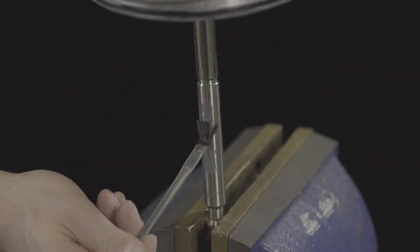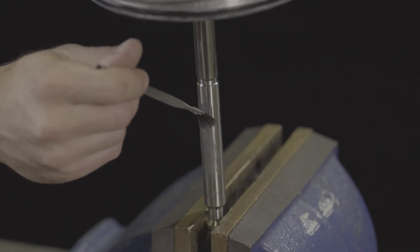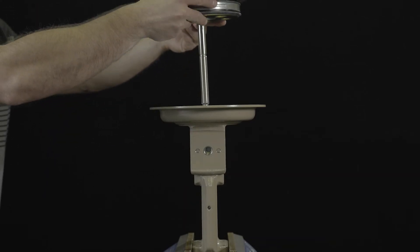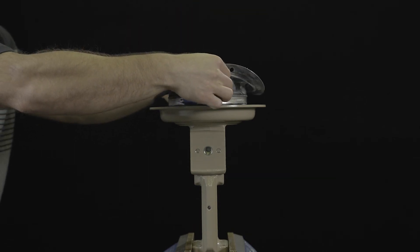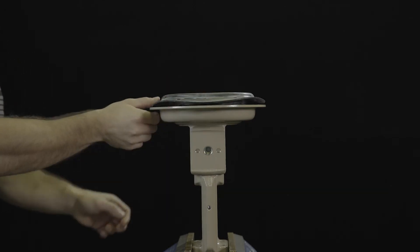If necessary, apply a suitable lubricant to the actuator stem. Install the diaphragm plate assembly together with the actuator stem pointing downward into the bottom diaphragm case.